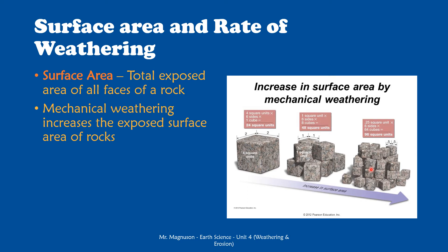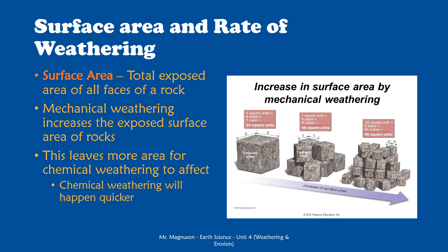Mechanical weathering is what causes this — it breaks rocks up into smaller pieces. So the arrow showing increasing surface area could also represent increasing mechanical weathering. Why is this important? Chemical weathering happens on the outside of rocks. Only things exposed to the elements, whether water or air, are affected by chemical weathering and can have those minerals changed. So the more surface area is exposed, the more chemical weathering can happen and the quicker it can happen. Mechanical weathering increases exposed surface area, and increased exposed surface area means chemical weathering can happen quicker.